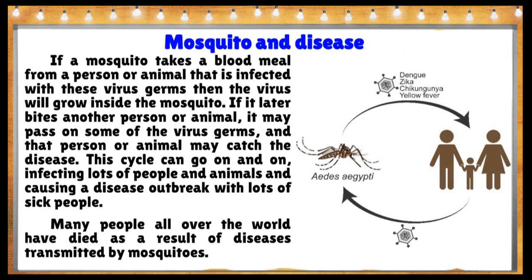If a mosquito takes a blood meal from a person or animal infected with a virus, the virus will grow inside the mosquito. If it later bites another person or animal, it may pass on the virus germs and that person or animal may catch the disease. This cycle can go on and on, infecting many people and animals and causing a disease outbreak. Many people around the world have died from diseases transmitted by mosquitoes.